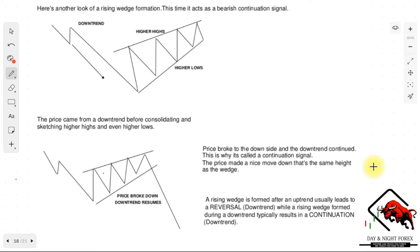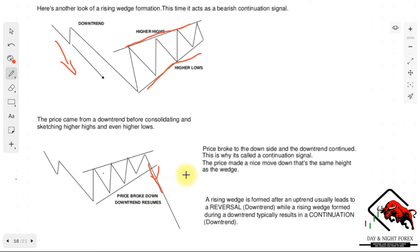In the above example the rising wedge acted as a reversal pattern, but here it is actually a bearish continuation signal. The market was falling and then formed a rising wedge — higher highs and higher lows — and then broke out to the downside. The price came from a downtrend, consolidated with higher highs and higher lows, then broke to the downside and the downtrend continued. That is why this is called a continuation signal, and the price made a move down equal to the same height as the wedge.